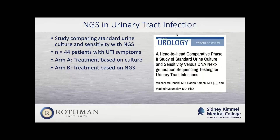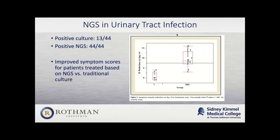This is one of the more recent head-to-head randomized studies looking at treatment based on culture versus treatment based on NGS — something we're looking to replicate in orthopedics as well. In urology, with 44 patients with UTI symptoms, culture was positive in only 13 of those cases, whereas NGS was positive in all 44. Most importantly, the outcomes were much better — symptom scores for patients treated based on NGS were much higher at two weeks compared to those treated based on culture.